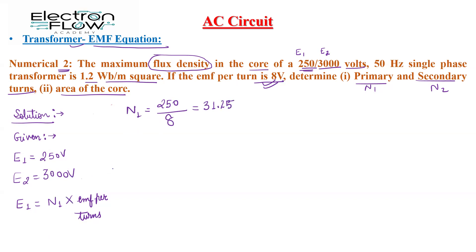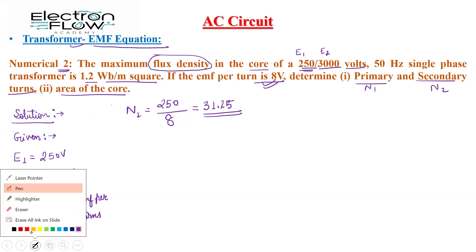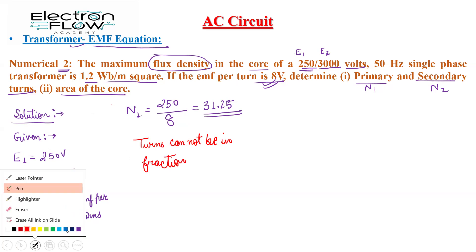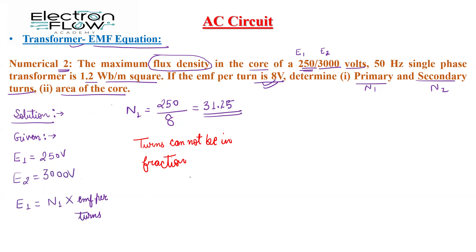Now turns cannot be in fraction, so we round up and put N1 equal to 32.